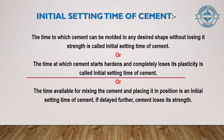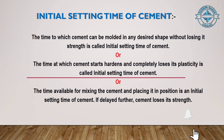Now we learn initial setting time of cement. The time during which cement can be molded into any desired shape without losing its strength is called the initial setting time of cement. Another definition: the time at which cement starts hardening and completely loses its plasticity is called initial setting time. It is also defined as the time available for mixing the cement and placing it in position. If delayed further, cement loses its strength.